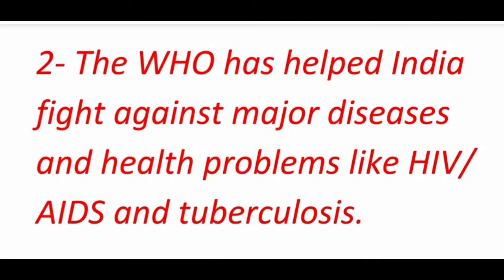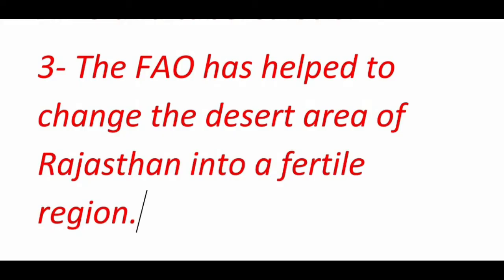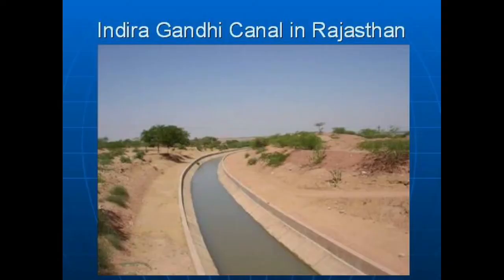The WHO, World Health Organization, has helped India fight against major diseases and health problems like HIV, AIDS, and tuberculosis. The FAO, Food and Agriculture Organization, has helped to change the desert area of Rajasthan into a fertile region. It has helped to improve farming methods, and new techniques of farming, seeds, and fertilizers have been developed by Indian scientists with help from the FAO.